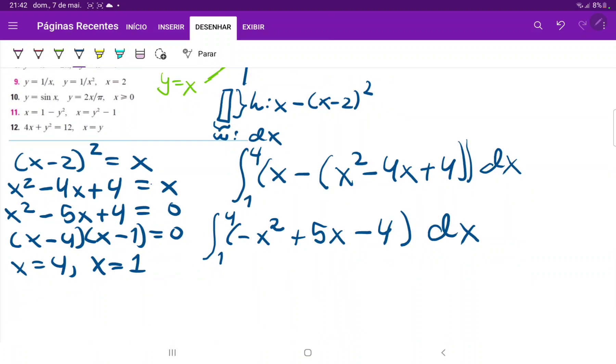So when we're integrating we're just doing a very simple reverse power rule. So that is minus x cubed divided by 3 plus 5x squared divided by 2 and then that is minus 4x, all this from 1 to 4.